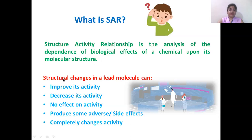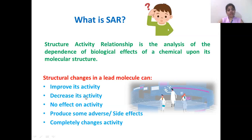When we make certain changes to a lead molecule, it causes a change in activity. Whenever such changes are made to a lead or parent molecule, there are five possibilities in which the activity can change. The analog produced may show an improvement in activity, a decrease in activity, no effect, some adverse or side effects, or a complete change in the activity.